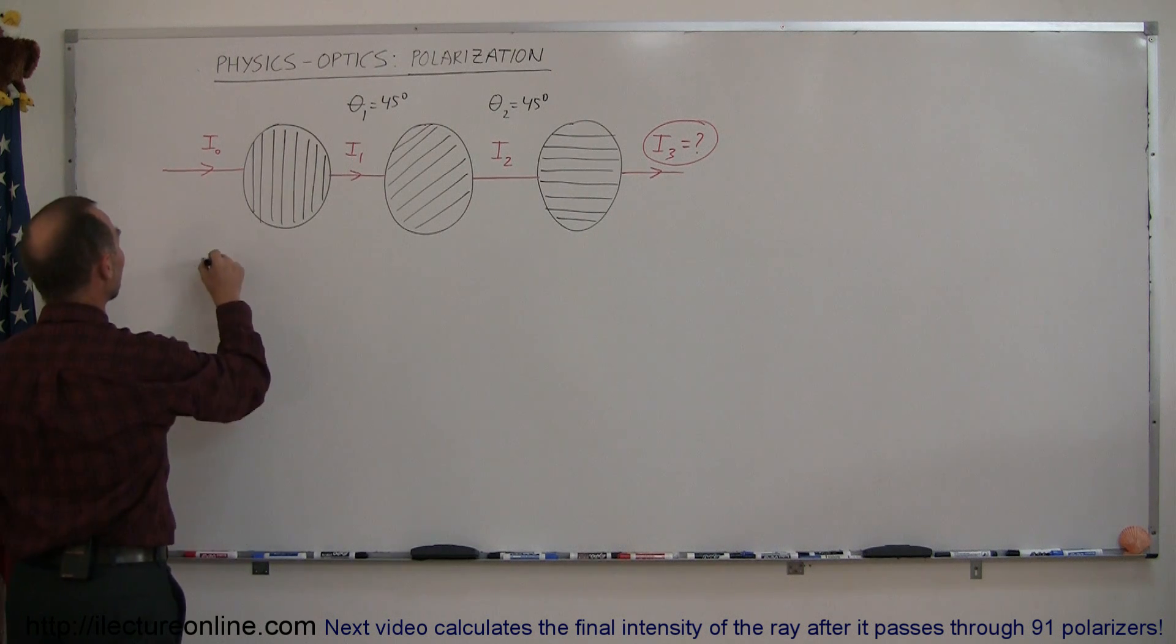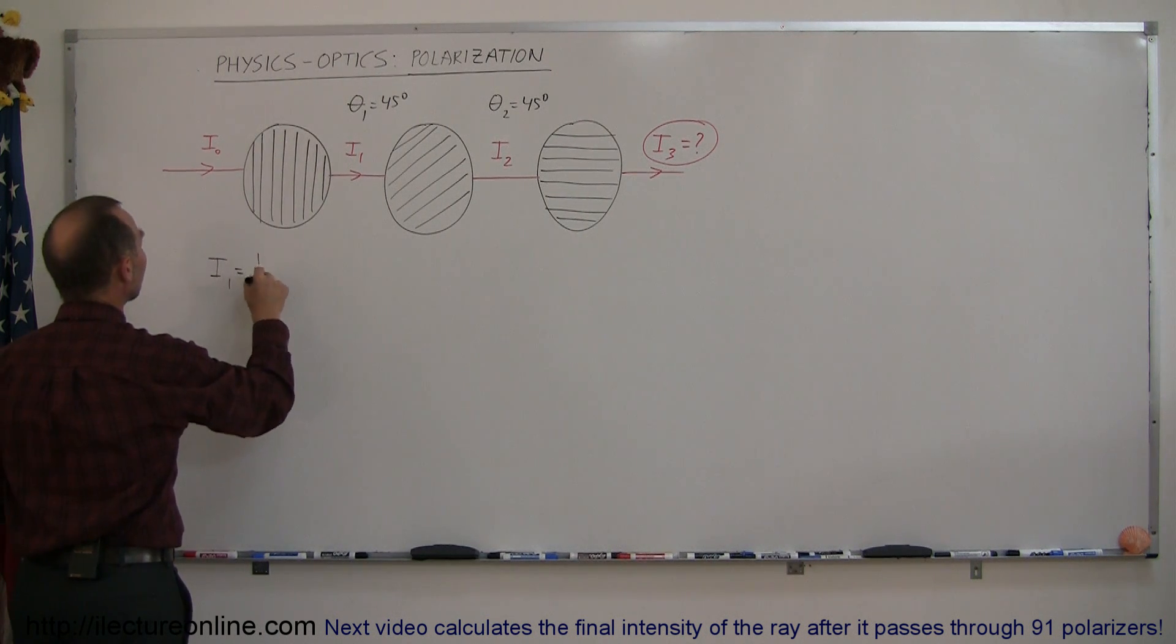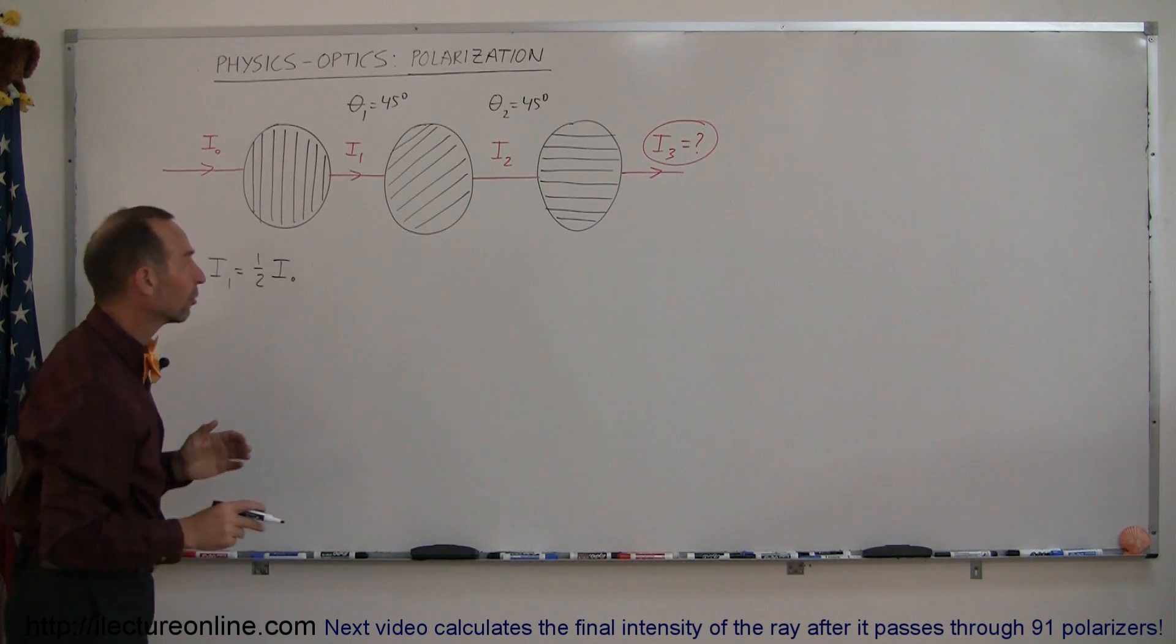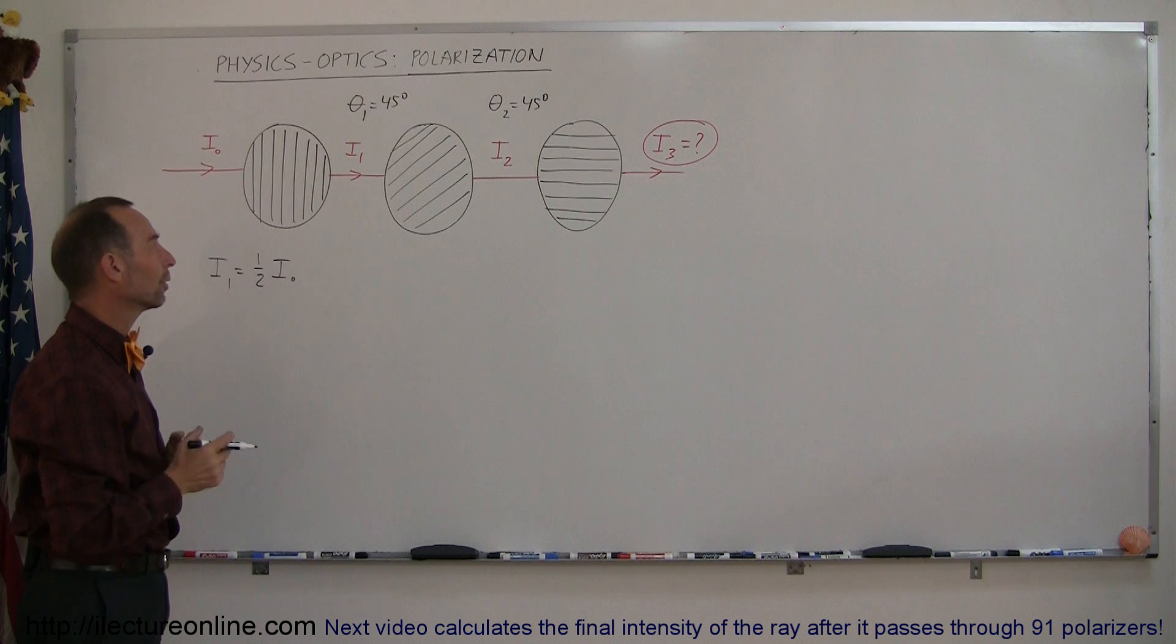First of all, we can say that I₁ is equal to one-half I₀. So after light passes through the first polarizer, you have lost half of your initial intensity.